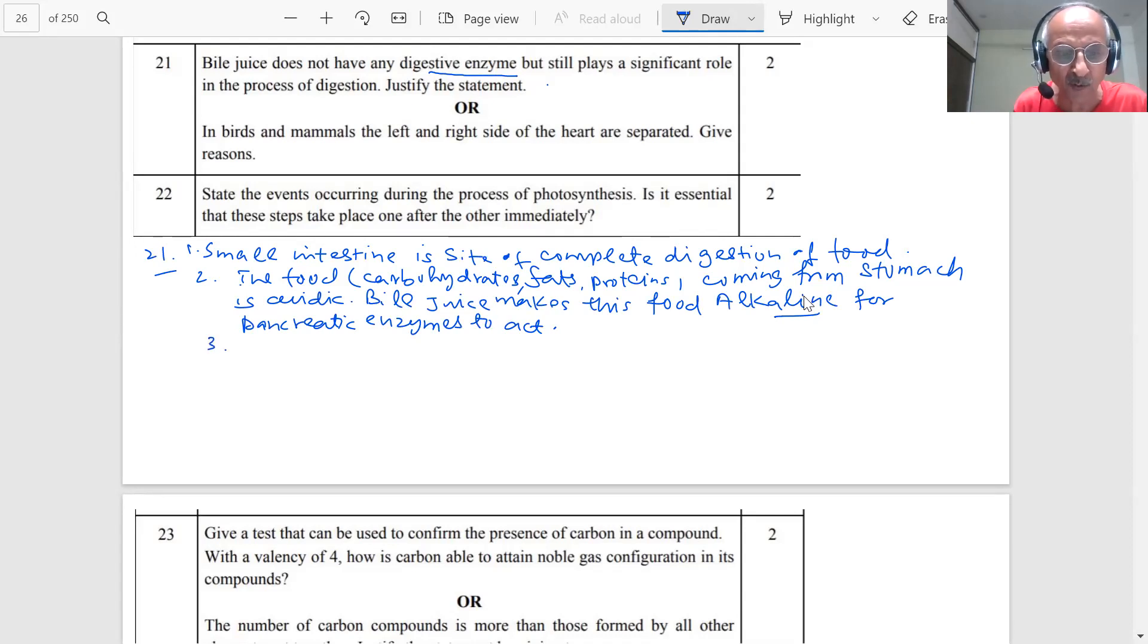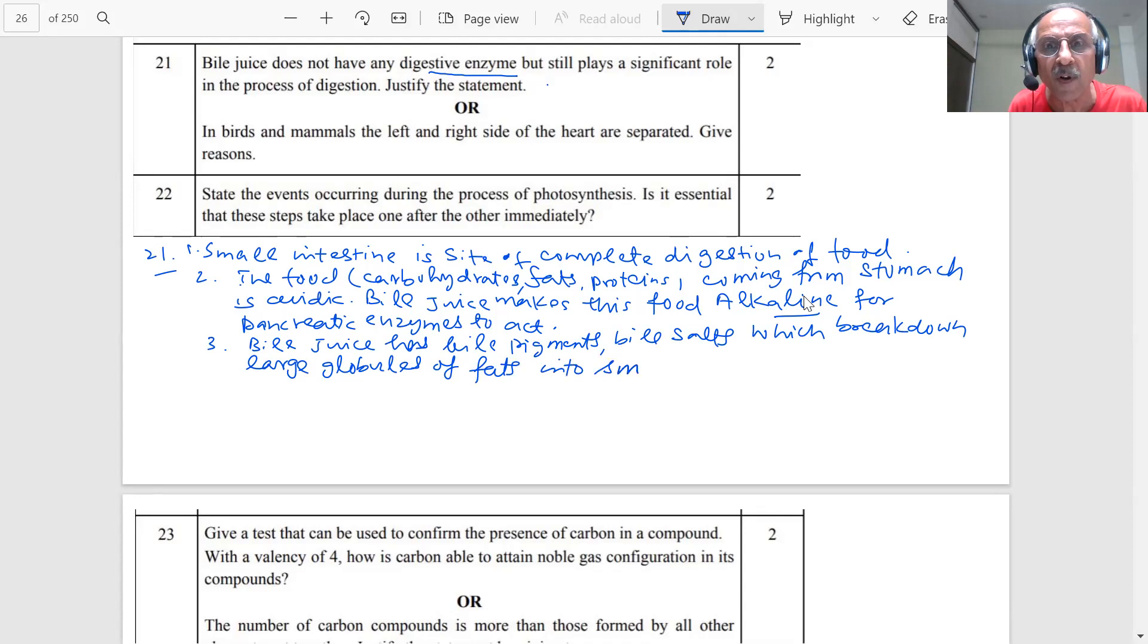And next point is bile juice has bile pigments and bile salts, which break down large globules of fats into small globules of fat.